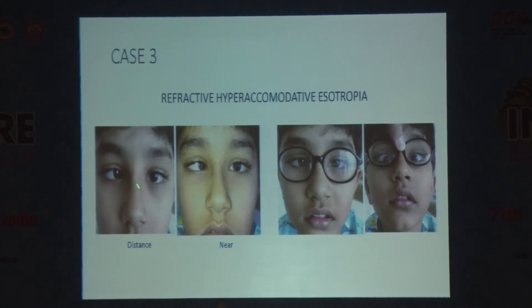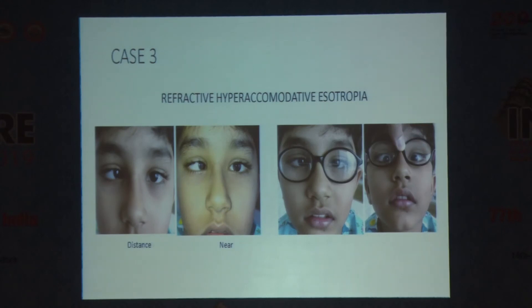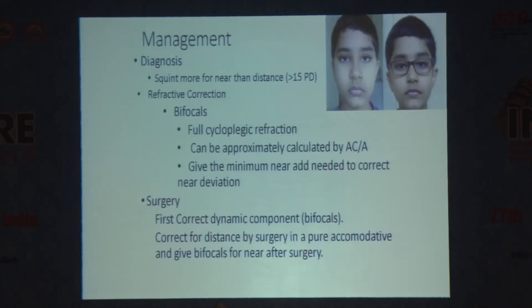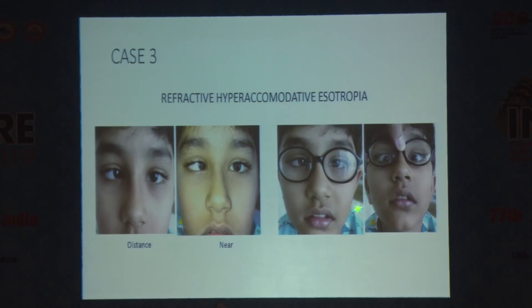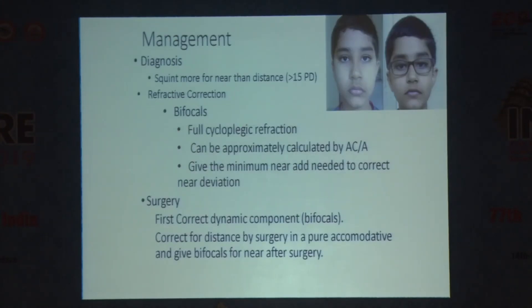That would be a case like this boy with esotropia increasing for near when fixating on a camera target. When we give bifocal glasses, he does improve, but a small amount of esotropia remains and he's not very comfortable with the bifocals. We could have left him with bifocal glasses, but in this case surgery was needed because he was not accepting them and the esotropia was causing a problem with stereoacuity. If esotropia persists despite bifocals, you need to consider surgery — that's the partially accommodative variety.